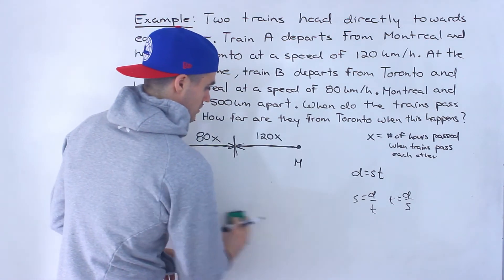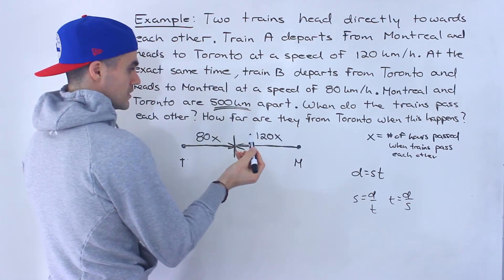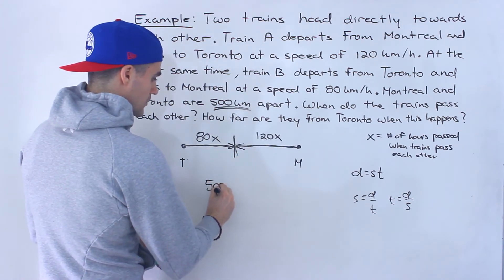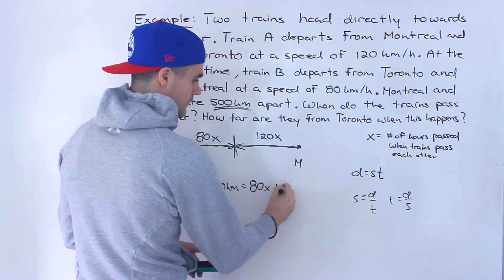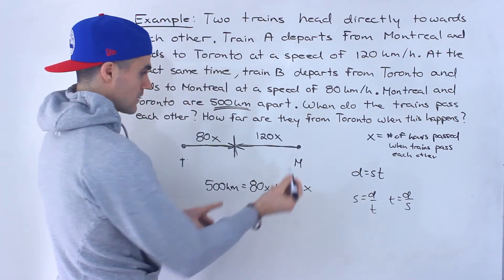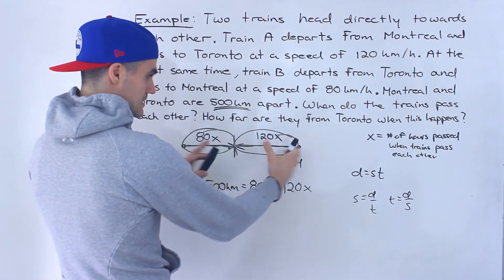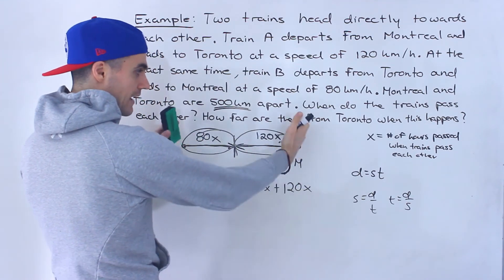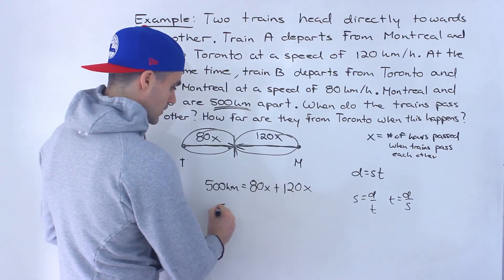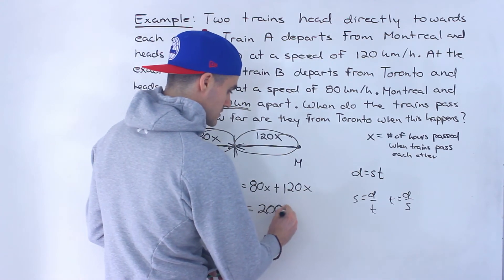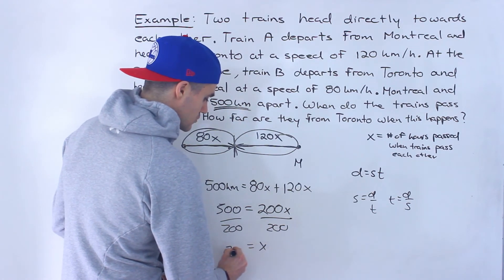The total distance from Toronto to Montreal is 500 kilometers. So we can set up the equation: 500 equals 80x plus 120x. This is the distance train B travels plus the distance train A travels, and together they must equal 500. That simplifies to 500 equals 200x. Dividing both sides by 200, we get x equals 2.5.